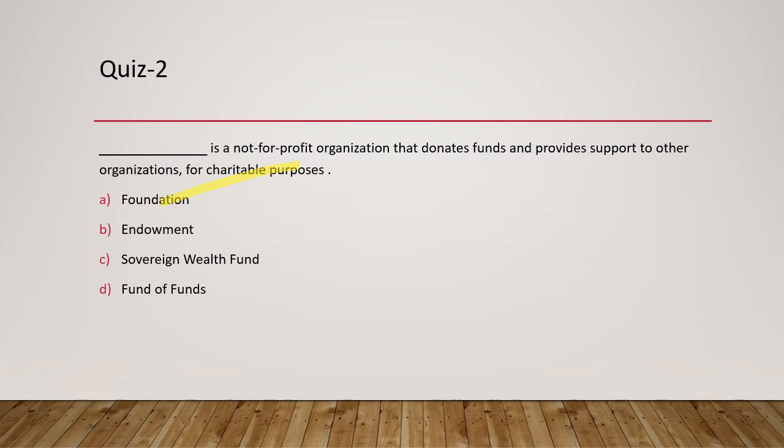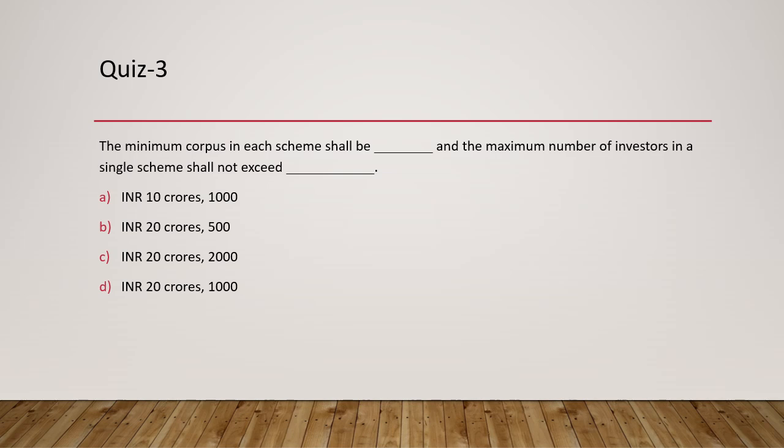The next question asks: what is the minimum number of investors per scheme of an AIF, and what is the maximum number of investors in a single scheme? The minimum is 20 and the maximum number of investors is 1,000. So option D is the correct answer here.